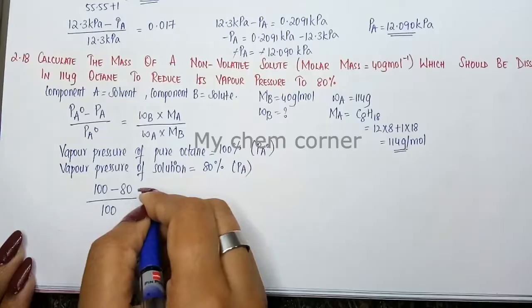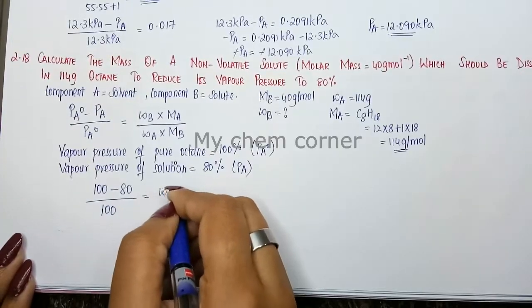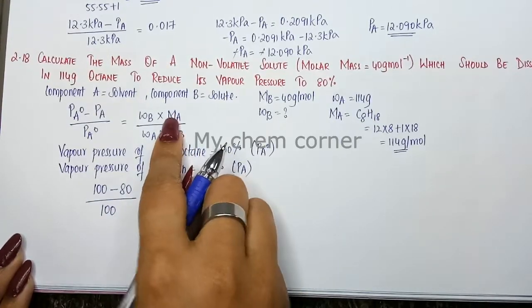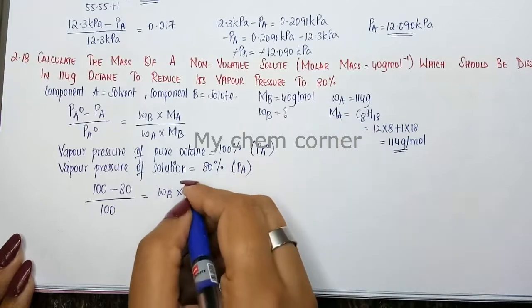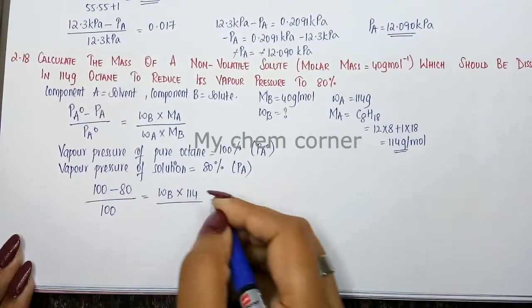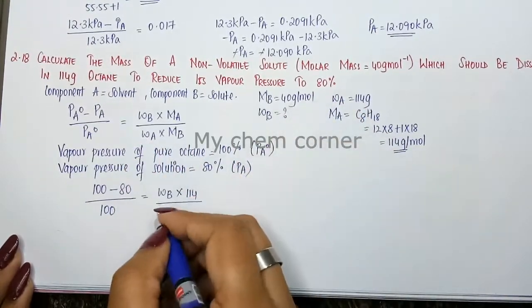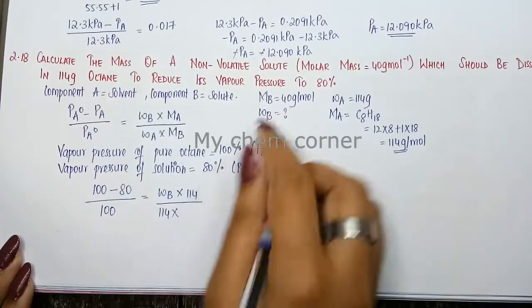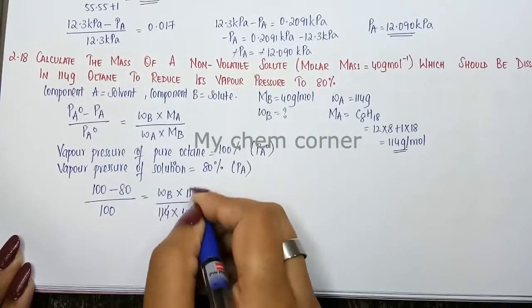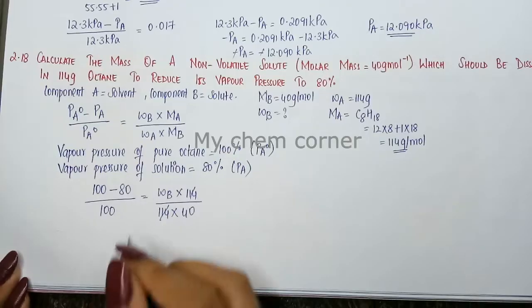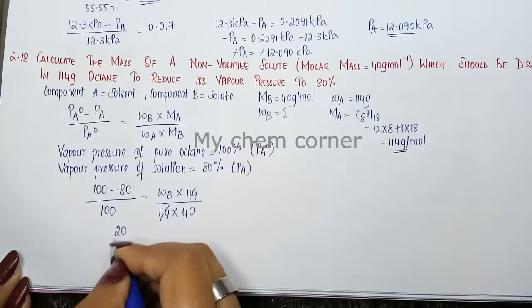Which equals WB into MA, 114, by WA, 114, into MB, 40. The 114s will get cancelled, so you have 20 divided by 100 into x by 40.